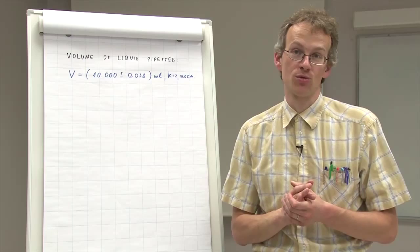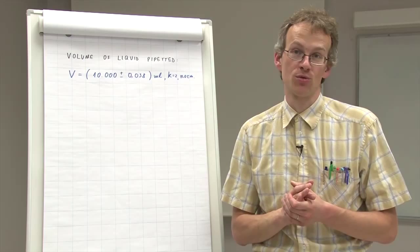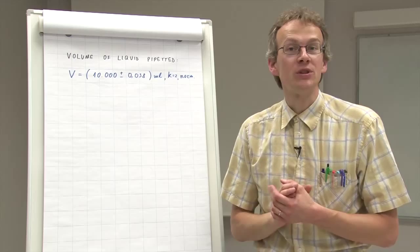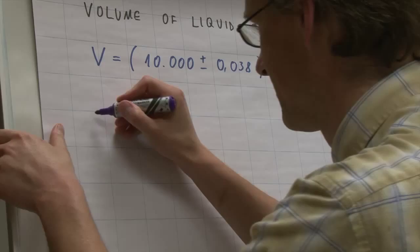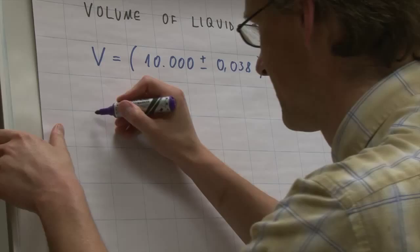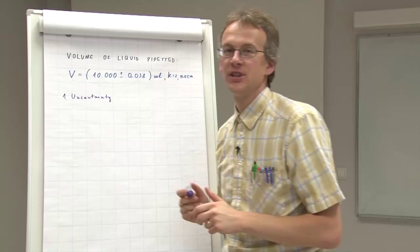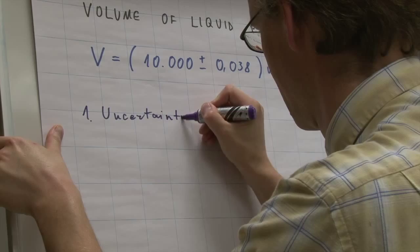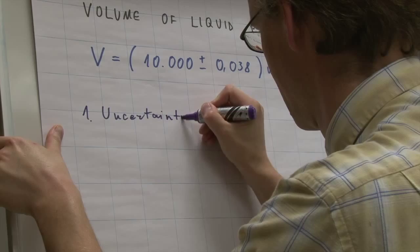But I will give you one approach that is fairly reasonable and usable in almost all cases. So whenever you want to decide how many decimals after the comma you have to give, you first start with the uncertainty. So step one is to look at the uncertainty. And with the uncertainty, you will have to look at the number of significant digits.